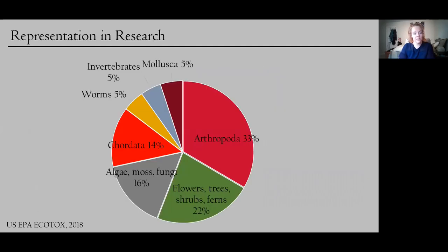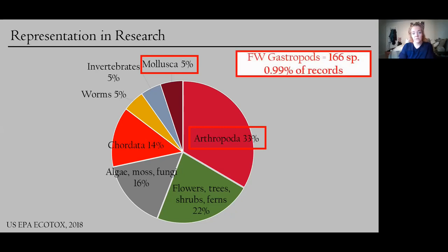And so that's actually shown here. This pie chart shows us the representation of different taxonomic groups in ecotoxicological data according to the US EPA Ecotox database. So arthropods are the largest, most diverse phylum on the planet. They're represented in 33% of the records. But molluscs, which are the second largest group, they're only represented in 5% of the records. And there are even fewer records for freshwater gastropods with less than 1%. So they're really important and they're going extinct at an unprecedented rate and yet we don't have enough research about them.